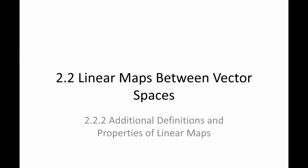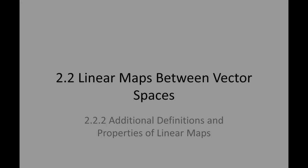We're now going to talk about three additional definitions of linear maps. First we're going to talk about the transpose, then the inverse, and then we're going to talk about the invariance of 3 by 3 matrices.